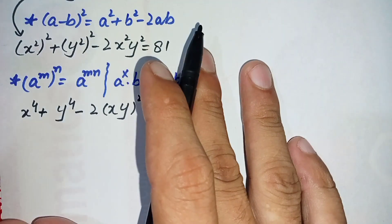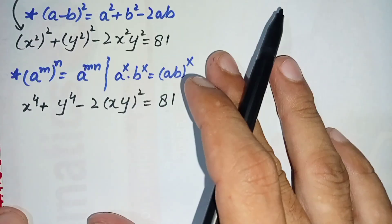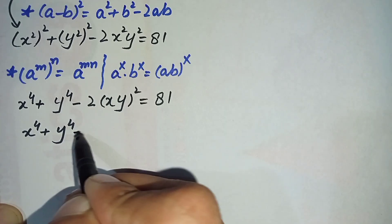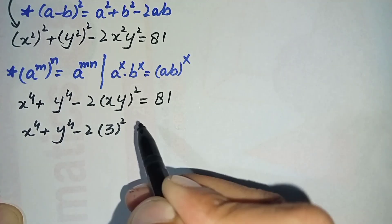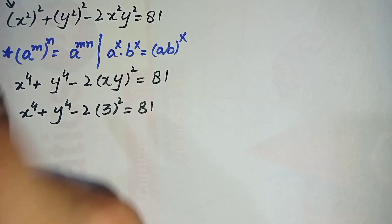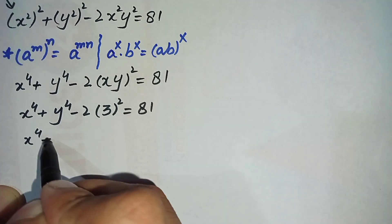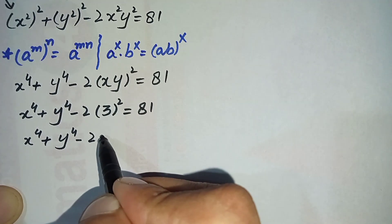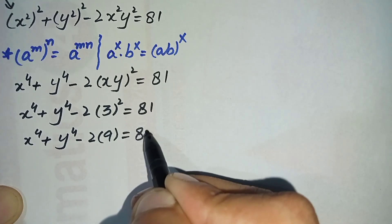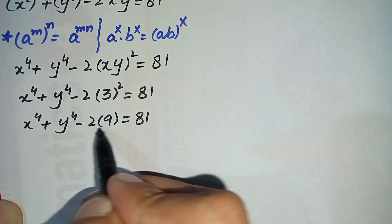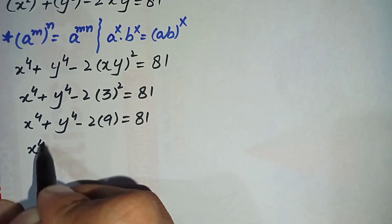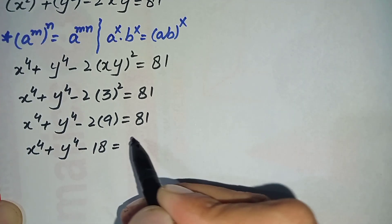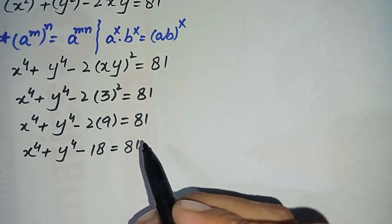Now we will put the value of xy that is given in the question, which is 3. So this equation will become: x to the 4th plus y to the 4th minus 2 times 3 squared is equal to 81. That is x to the 4th plus y to the 4th minus 2 times 9, which is 18, is equal to 81. We will shift minus 18 to the right hand side.